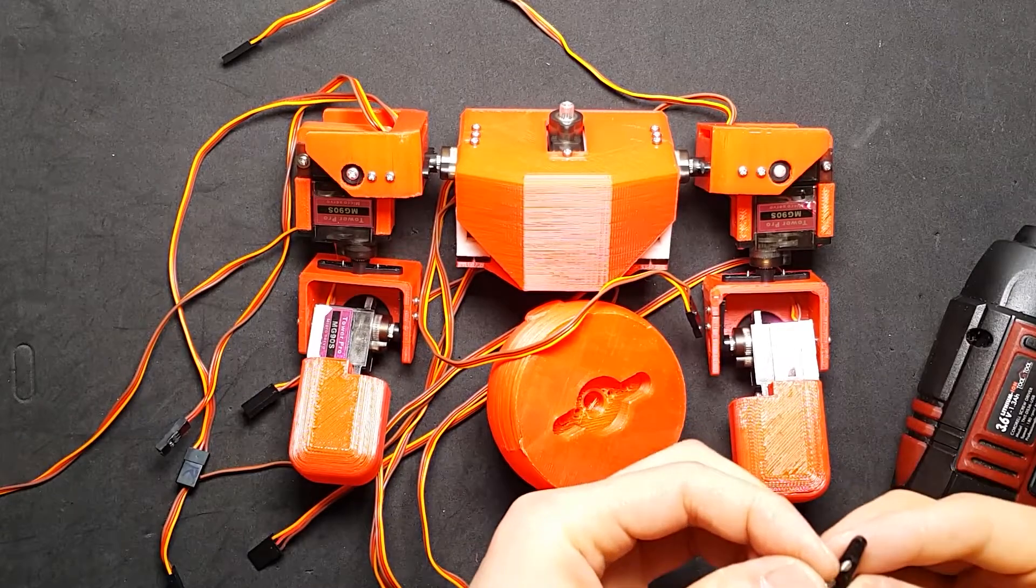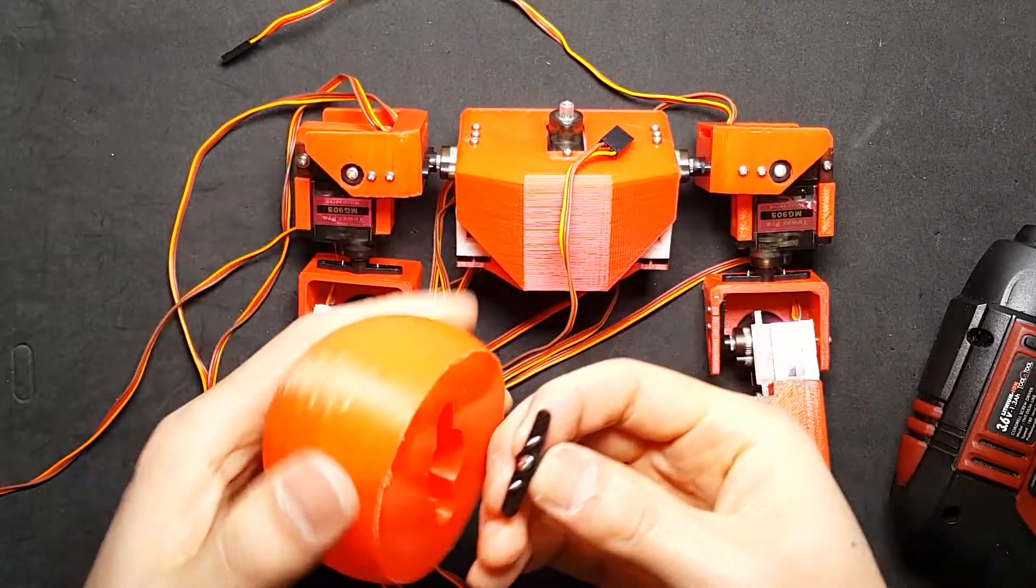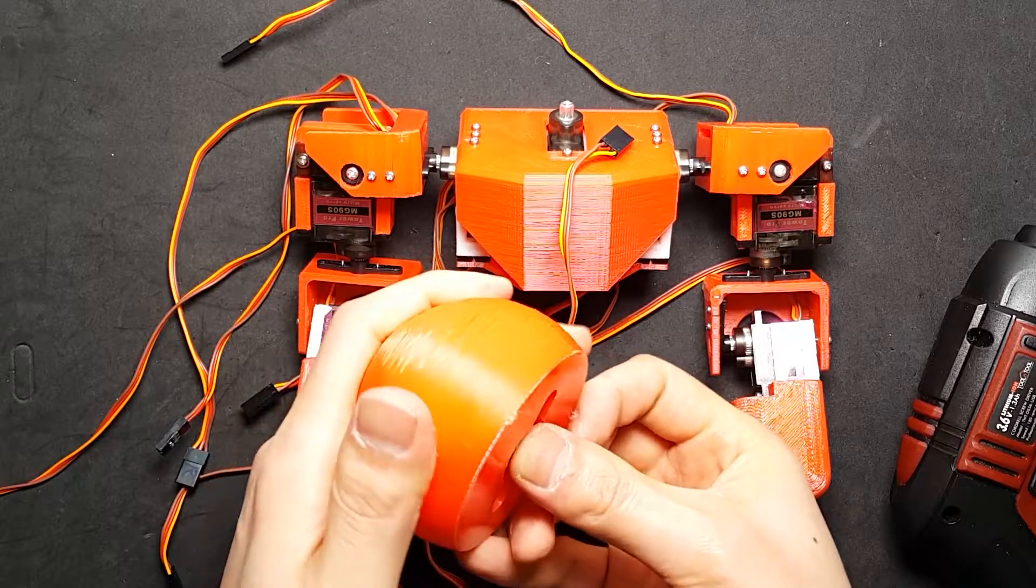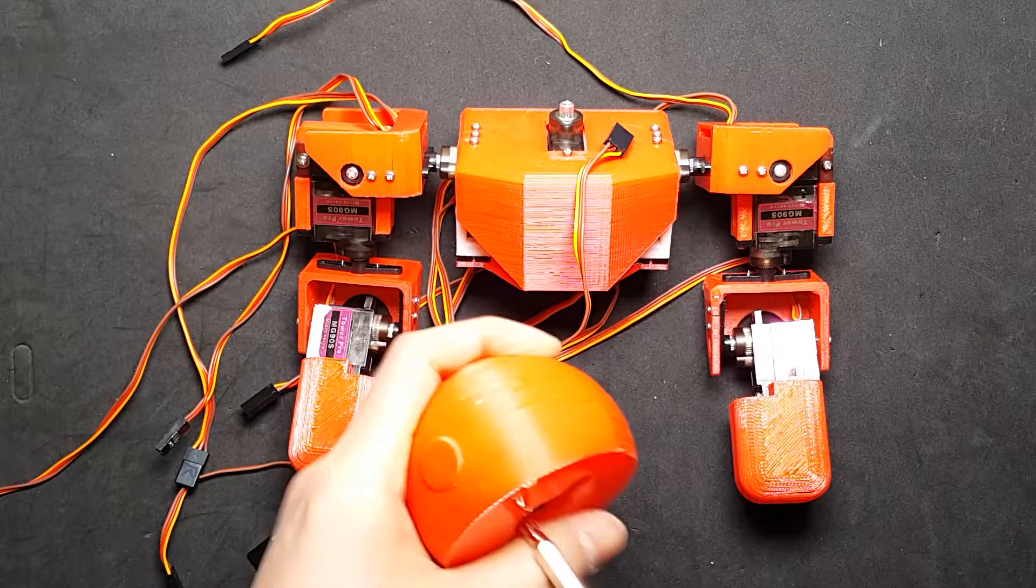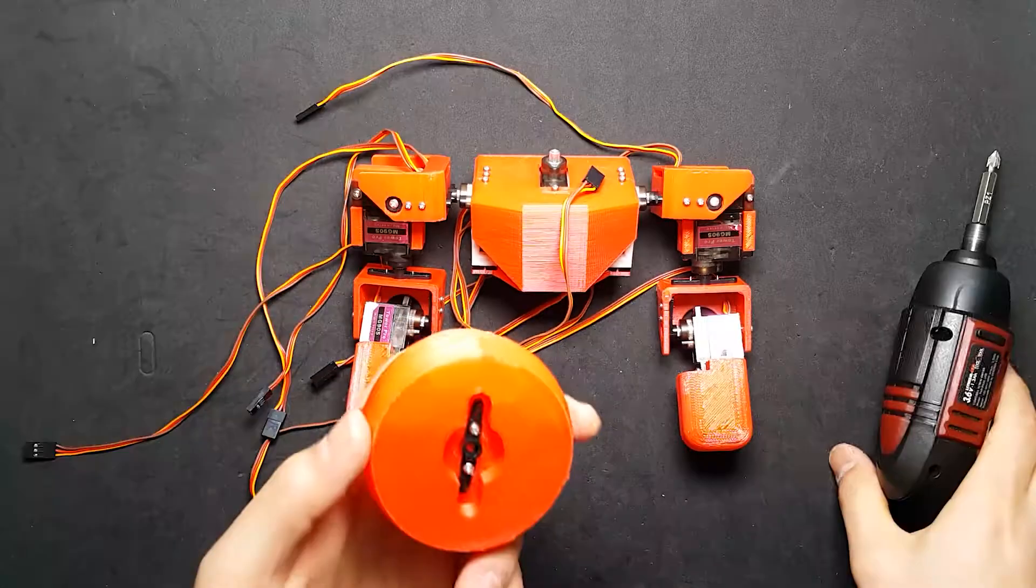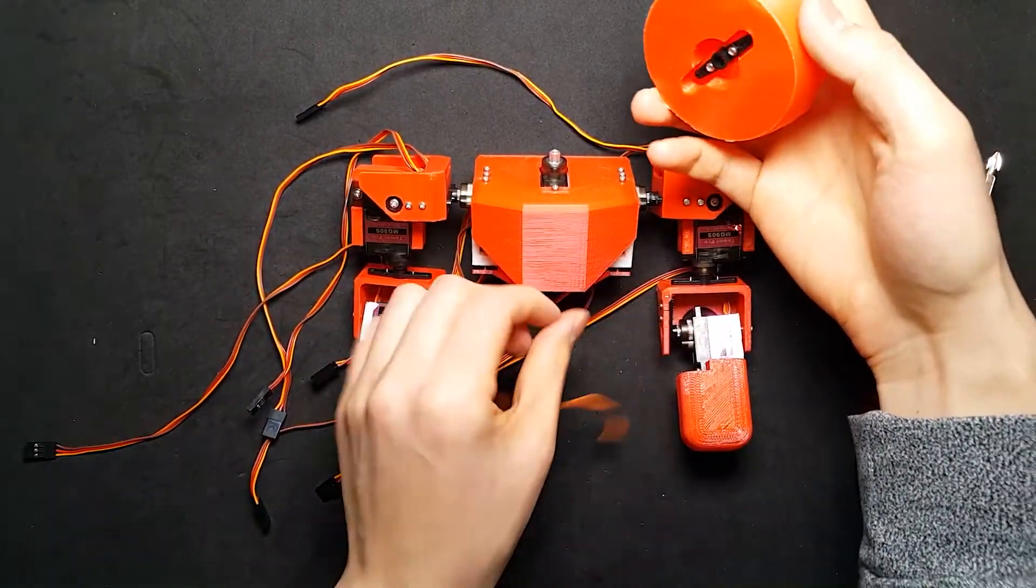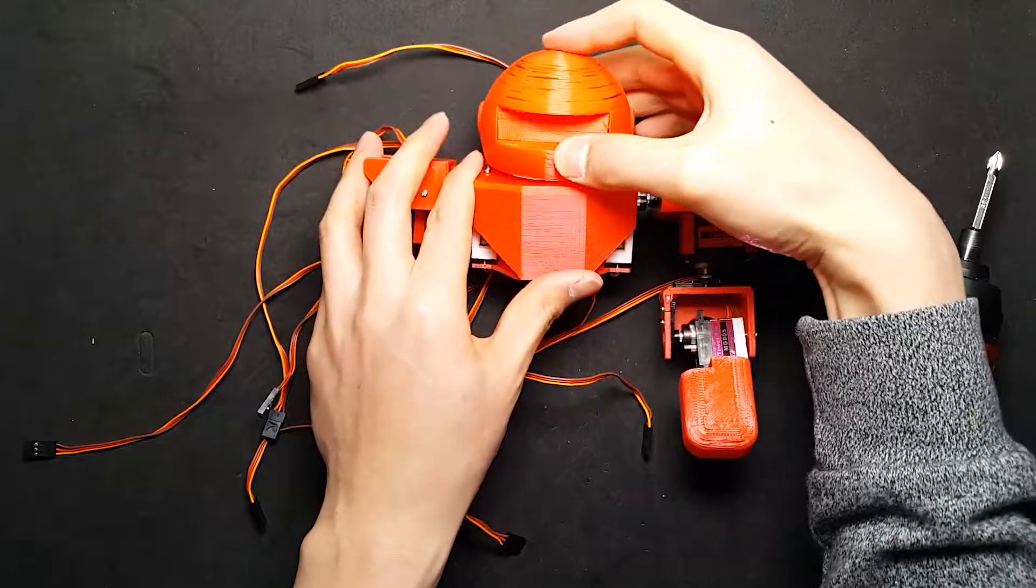Considering the functional aspect of the robot, the head has no function. After long consideration, I finally decided to put an extra motor for the head. Because this motor is not for functional but for emotional.